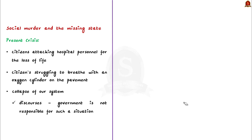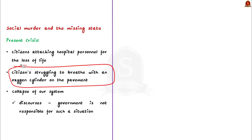With each passing day the situation in India is getting worse, evident with surging positive cases and casualties. Instances of citizens attacking hospital personnel for loss of their loved ones due to inadequate medical care, or scenes of citizens struggling to breathe with oxygen cylinders on the pavement, highlight the intensity of the crisis. The author points out that on the other side we are witnessing the failure of the Indian state or the collapse of our system, and narratives that disown governmental responsibility affect people's trust over the state and impact Indian democracy.